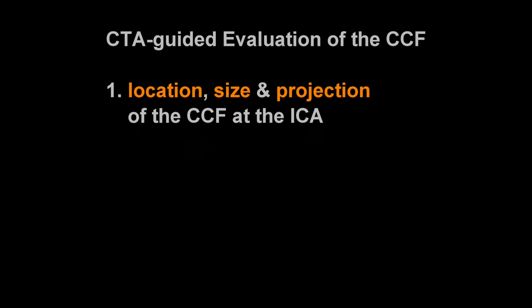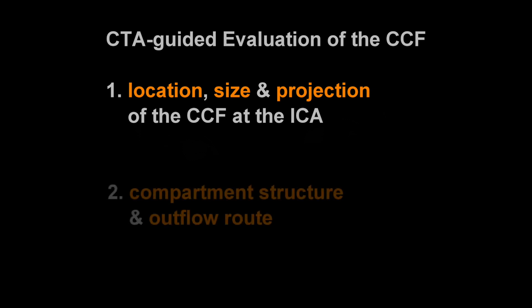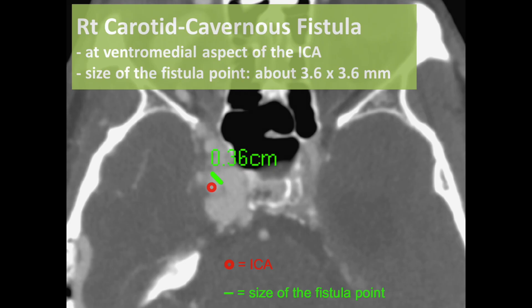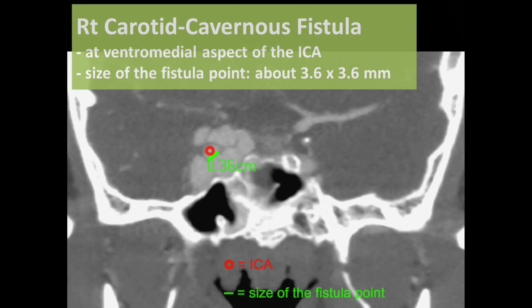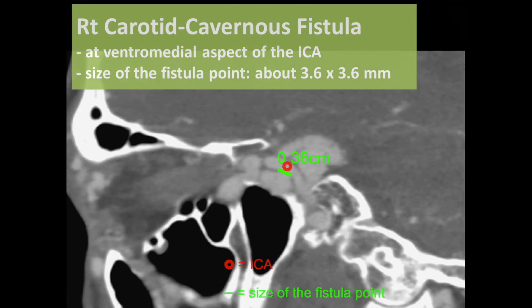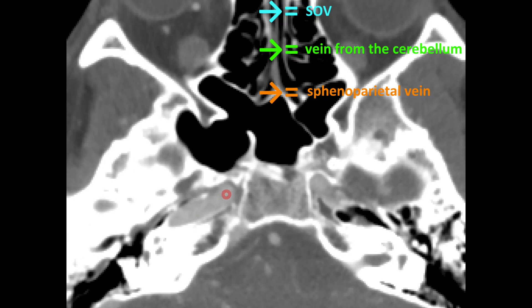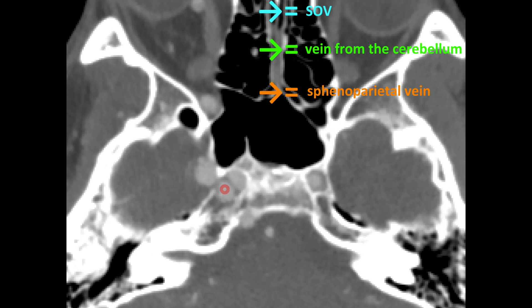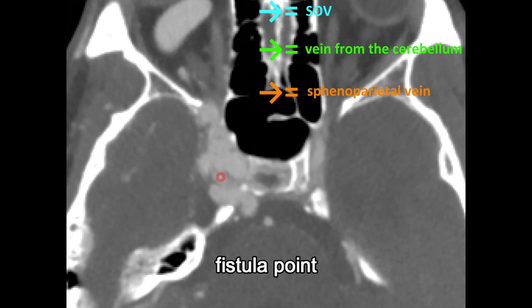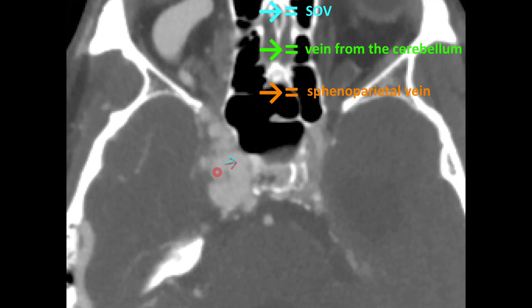CTA images were used to evaluate the location and size of the fistula point as well as its projection at the ICA. By evaluating the compartment structure and outflow routes of the cavernous sinus, we know how to navigate our microcatheters to the targets. In these CTA images, the red dot represents the ICA course. The fistula point and three outflow channels were identified.